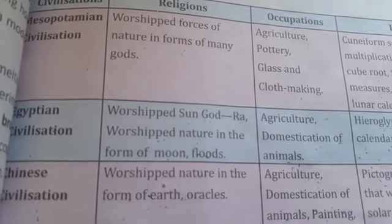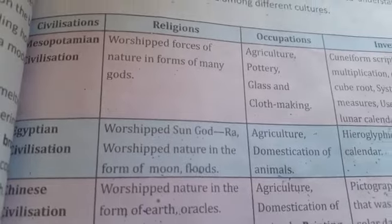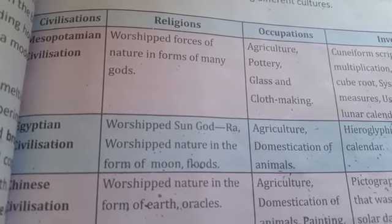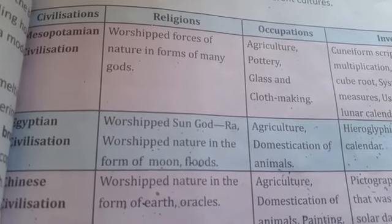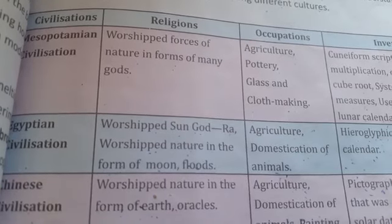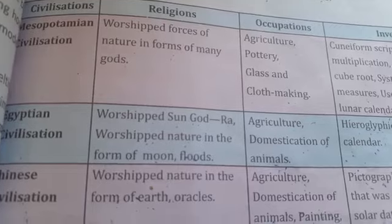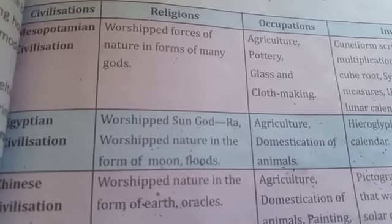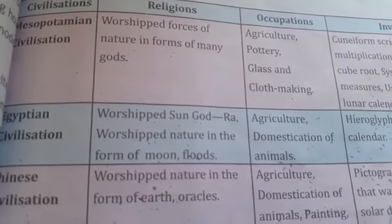Hello children. In our previous lecture we learned about civilization and the places where civilization developed — four ancient civilizations: Egyptian civilization, Mesopotamian and Babylon civilization, Harappan and Vedic civilization, and Chinese civilization. Now we shall see the comparison among these civilizations.